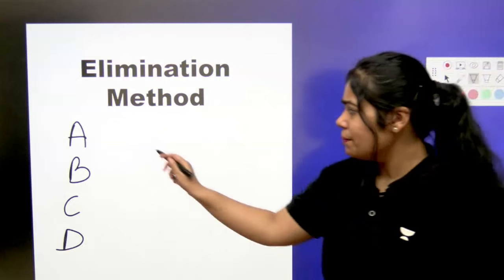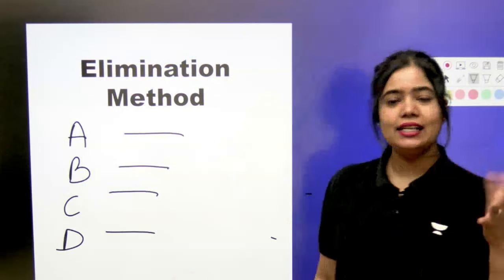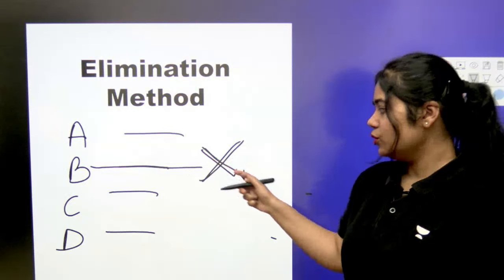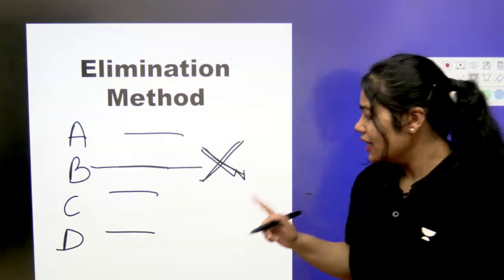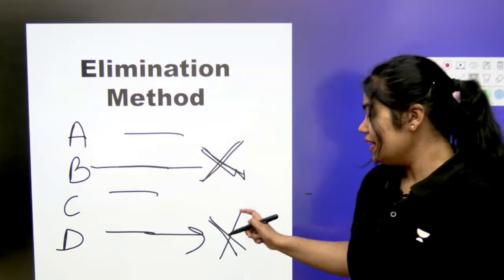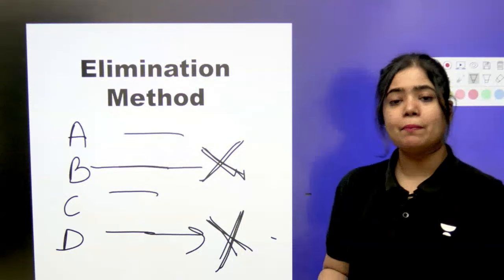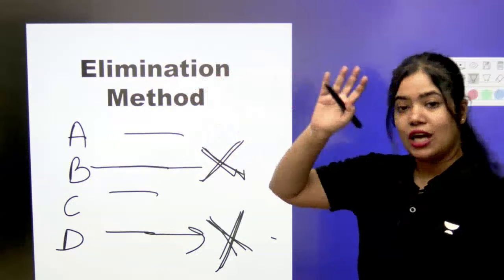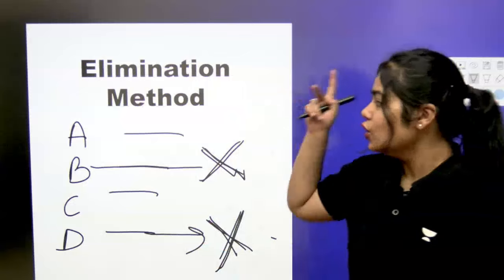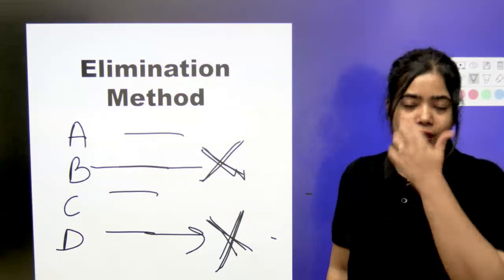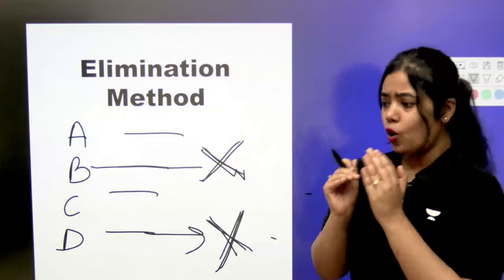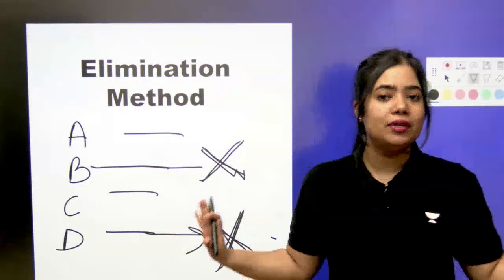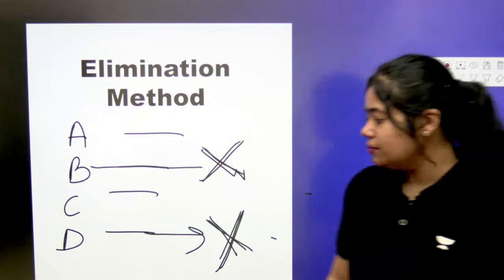When we have 4 options and we don't know the right answer, we can eliminate the ones we know are wrong — for example, options A and C. By eliminating the clearly wrong options, we narrow it down and can select one right answer from what remains. So in the elimination method, look at the options carefully, and whichever options look like they can't be right, eliminate them.